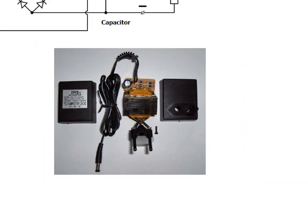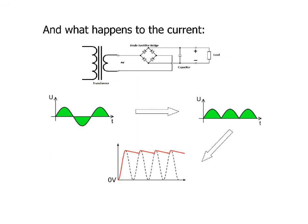Four diodes, a capacitor, and a transformer. So what do they do to the voltage? Well, let's look at that.